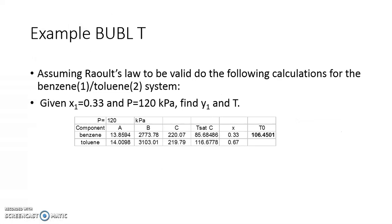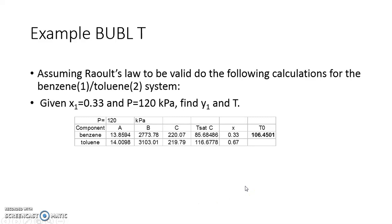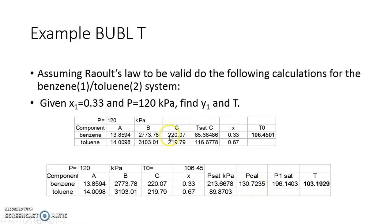Let us take an example: x1 = 0.33 and pressure = 120 kPa for the benzene-toluene system discussed in the previous video. Substituting this pressure into Antoine's equation gives T1_sat and T2_sat. With x1 and x2 known, the initial estimate T0 comes to 106.45°C. Using this temperature we calculate P1_sat and P2_sat, and P_calc = 130 kPa.